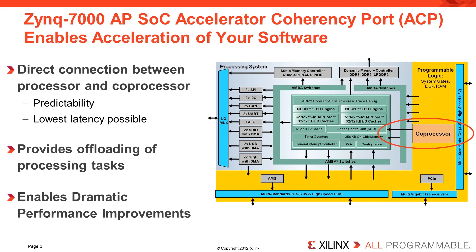As you can see from the Zynq architecture diagram, the Accelerator Coherency Port, or ACP, is connected directly to the programmable logic, also known as PL. This is what gives Zynq low latency and predictability for coprocessing accelerators. It is this low latency path that enables the offloading of processing tasks to coprocessors implemented in the programmable logic, which can provide dramatic software performance improvements.